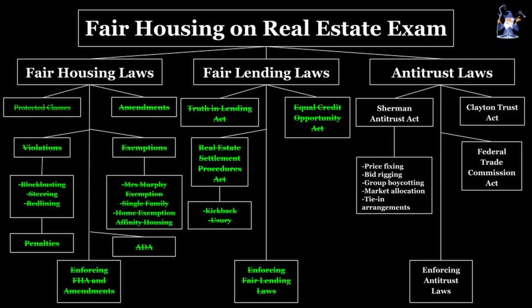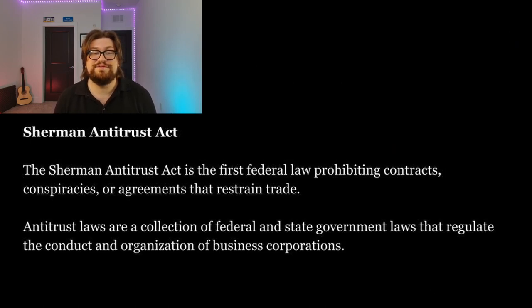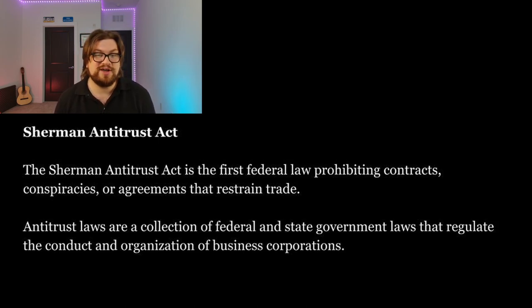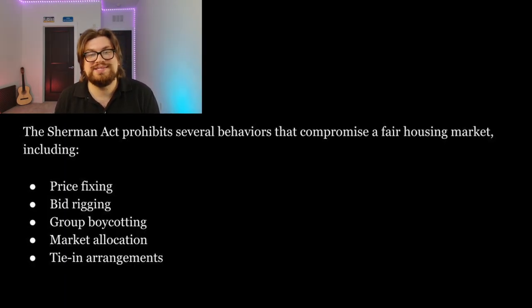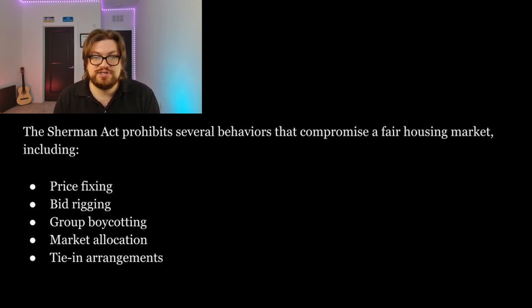Now that we've covered fair housing and fair lending, we need to cover antitrust laws. Like fair lending, antitrust laws encompass fair housing, and that all starts with the Sherman Antitrust Act. The Sherman Antitrust Act is the first federal law prohibiting contracts, conspiracies, or agreements that restrain trade. Antitrust laws are a collection of federal and state government laws that regulate the conduct and organization of business corporations, typically aiming to promote fair competition for the benefit of consumers. The Sherman Antitrust Act prohibits several behaviors that compromise a fair housing market, including price fixing, bid rigging, group boycotting, market allocation, and tie-in arrangements. These are all examples of antitrust violations in real estate and they show up on the exam all the time.